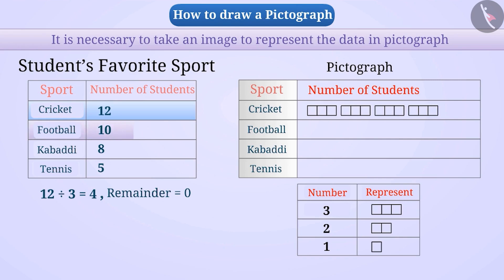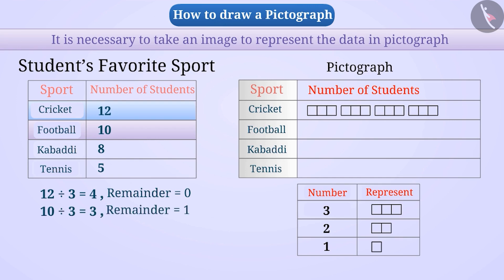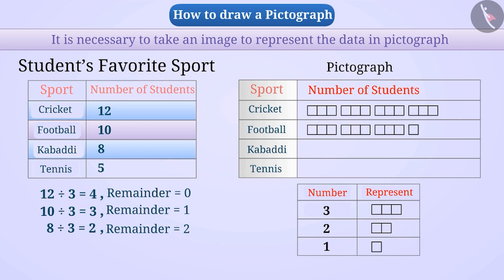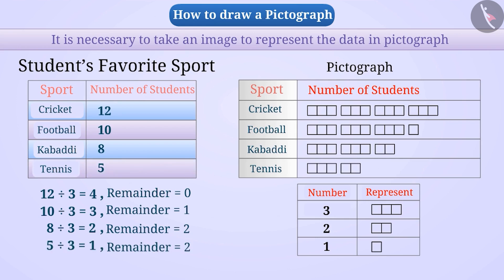Now, represent the number of students who like football. Here, 10 divided by 3 equals 3 with remainder 1, so we draw 3 complete images and use a partial image to show the remaining 1. Similarly, 8 divided by 3 equals 2 with remainder 2, and we can represent 8 in this way. Similarly, 5 can be represented as well. Thus, we have completed the pictograph.